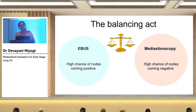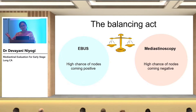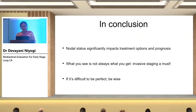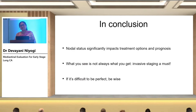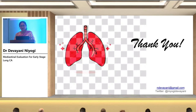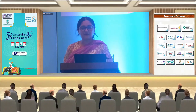The way we prefer to handle this is to pick EBUS when the chance of the node coming positive is high — use the less invasive procedure to confirm positivity and send the patient for systemic therapy. When the PET scan suggests nodes are unlikely to be positive, it's best to go in and do a mediastinoscopy, send nodes for frozen section, and if negative, proceed with surgery. It also helps you prognosticate your patient. What you see on PET is not always what you get — invasive staging is a must. It is difficult to be perfect, but it's best to be wise and choose between EBUS and mediastinoscopy based on what works best for the patient. Thank you very much.